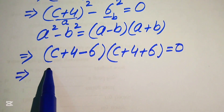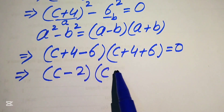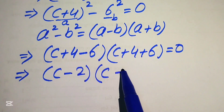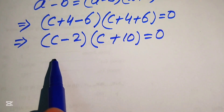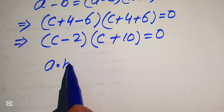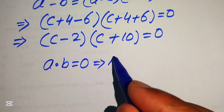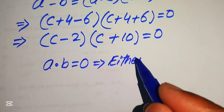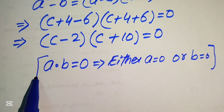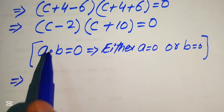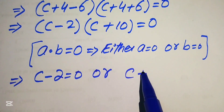In the next step we simplify: 4 minus 6 equals minus 2, giving (c minus 2), and 4 plus 6 equals 10, giving (c + 10), so (c minus 2)(c + 10) equals 0. Now we apply the zero product rule: if a times b equals 0, then either a equals 0 or b equals 0.